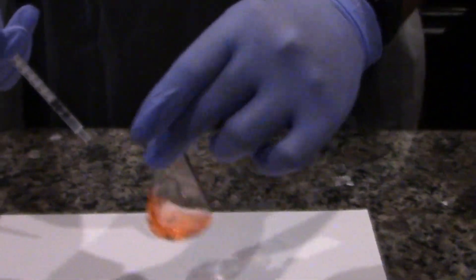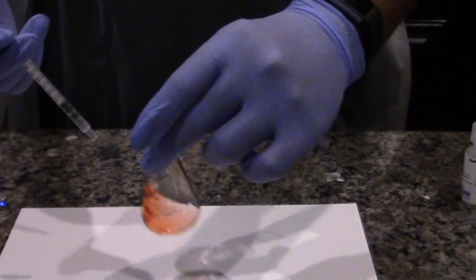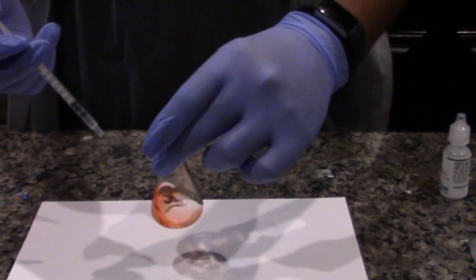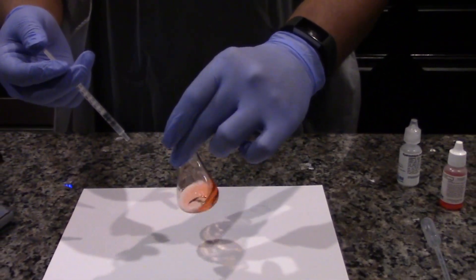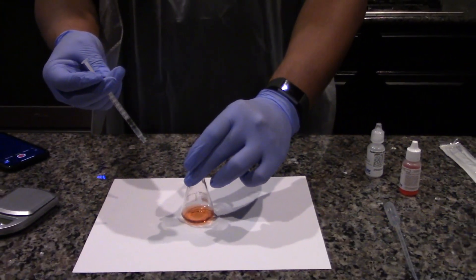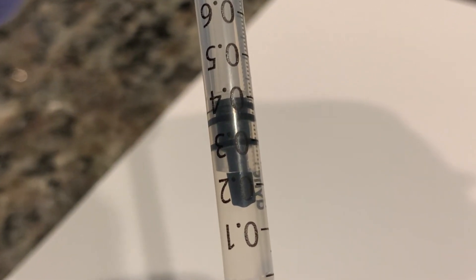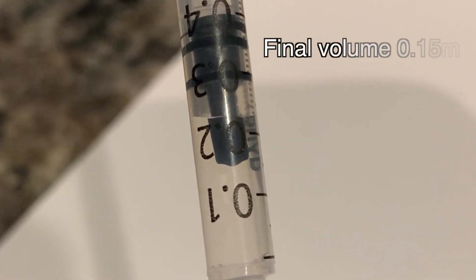The solution should be faintly orange or orange-red in color. Once the endpoint has been reached, record the final volume of HCL left in the syringe.